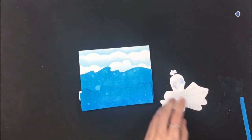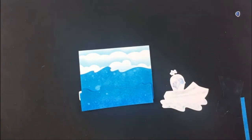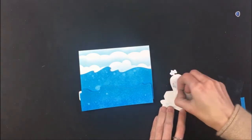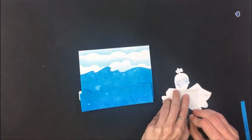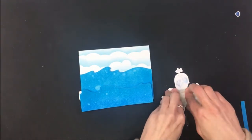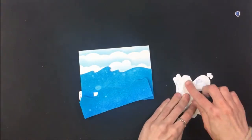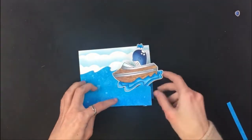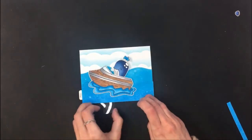I almost forgot to put my whale in there but I did remember, and then I just added some additional tape on the back of the whale before adhering the acetate to the boat and the whale. So once that is pushed down I'm going to check to make sure it holds nice and tight and then I'm going to check to see if it is sliding the way that it should.